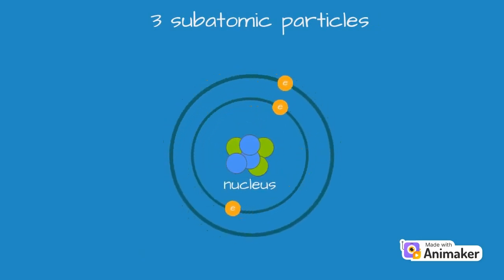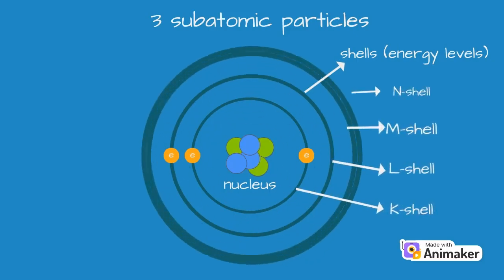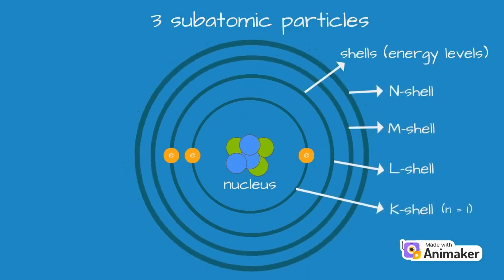We learned in our previous videos that atoms are made up of three subatomic particles: the protons and neutrons located at the nucleus, and the electrons orbiting around the nucleus. The electrons orbit in definite shells called energy levels. These shells are represented by the letters K, L, M, N, or the numbers N equals 1, 2, 3, 4 and so on.